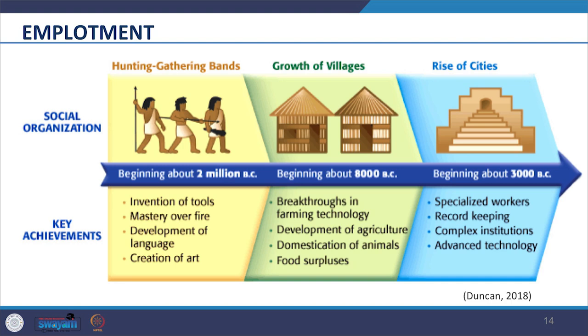We learned how to domesticate animals. We experienced food surplus, because of which we needed to store, protect, exchange, and have a system in place to manage all these things. These led us to settle in one place rather than being on a regular move, and also to choose to be close to water and add elements like stores, defence, and marketplaces to our settlements.